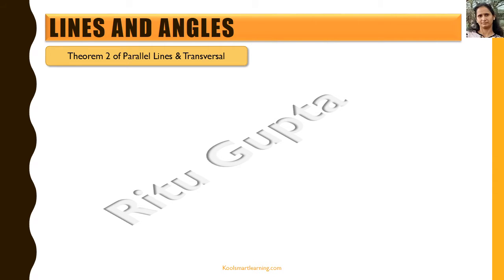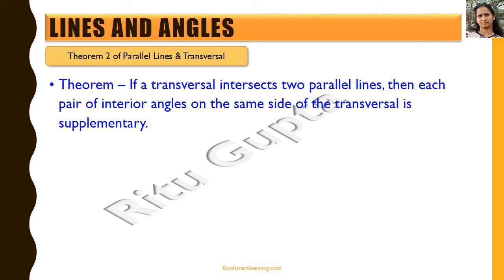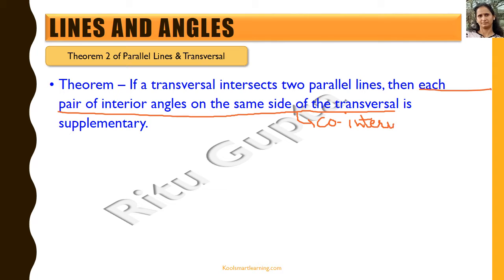Now let's look at the second theorem. The theorem says: if a transversal intersects two parallel lines, then each pair of interior angles on the same side of the transversal is supplementary. We are talking about the co-interior angles — each pair of interior angles on the same side of the transversal is nothing but co-interior angles. We have two parallel lines and a transversal intersecting them. The co-interior angles are these two — let's name them 1 and 2. We are saying that these two are supplementary, so let's prove this.